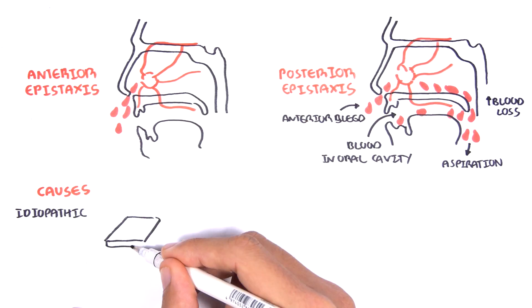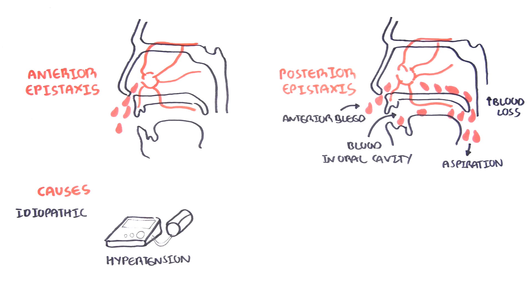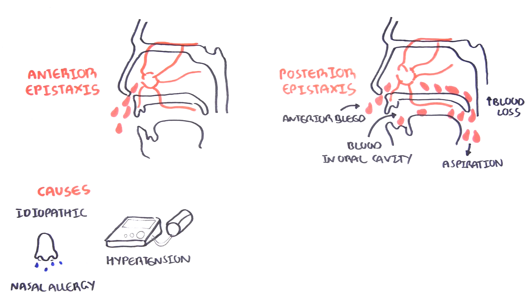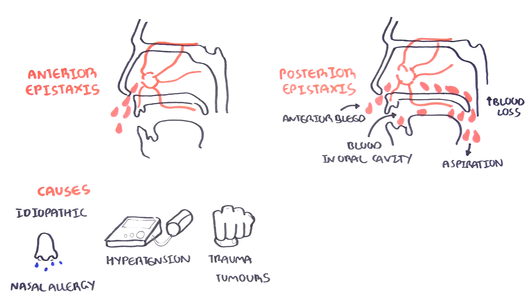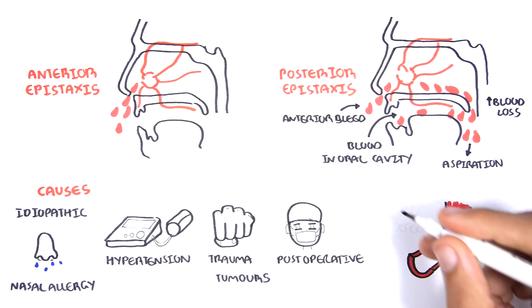The causes of epistaxis include idiopathic, just out of the blue, hypertension, having a nasal allergy which causes irritation and subsequent bleeding. It can also occur following trauma like a punch in the nose, tumors around the area, post-surgery, and having coagulopathies or vascular problems.